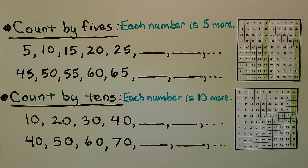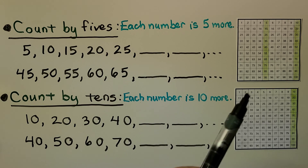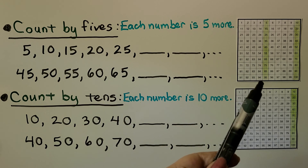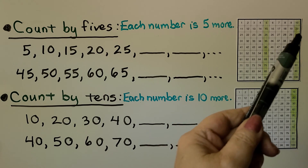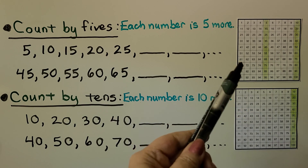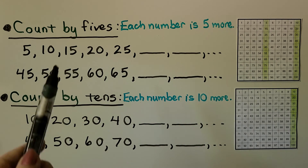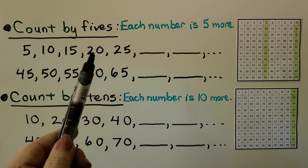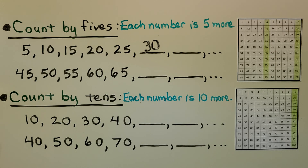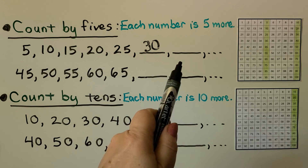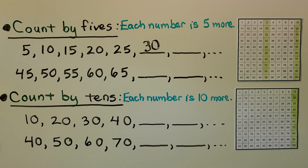We can count by 5s — each number is 5 more. We can look on a 100 chart and see the pattern: 5, 10, 15, 20, 25, 30. We're skip counting by 5s. We have 5, 10, 15, 20, 25 — do you know what comes next? If you said 30, you're correct. And what is 5 more than 30? If you said 35, you're right.